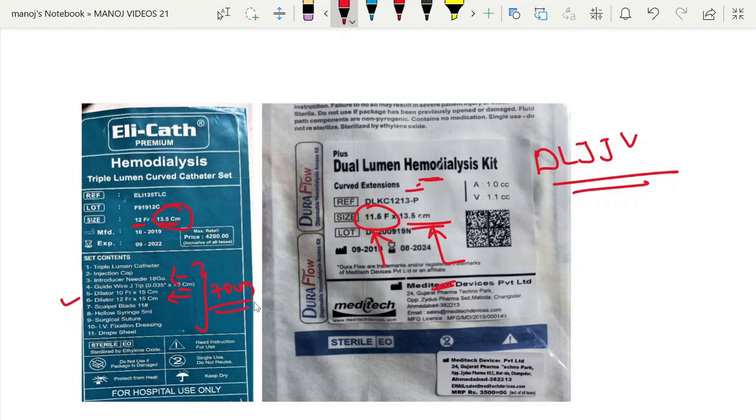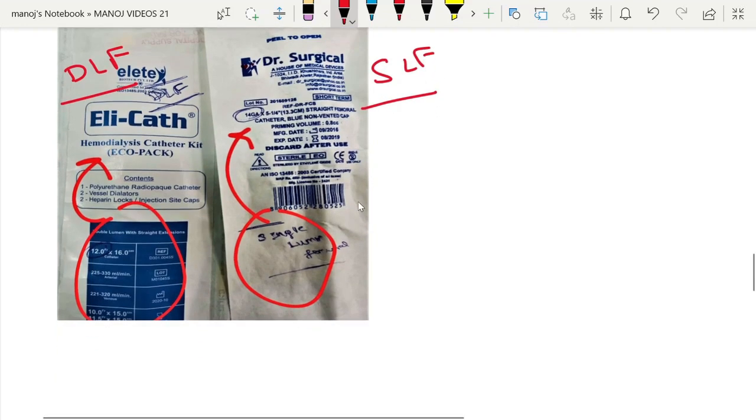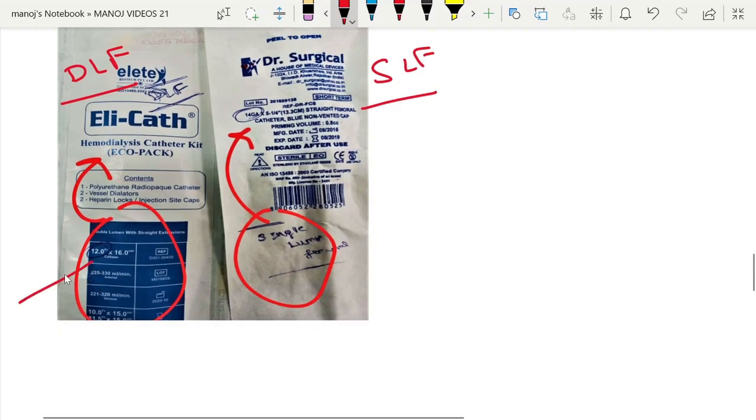This is the wrapper of double lumen femoral catheter. As we see here the size is 12 French or 16 centimeter. And here they have mentioned what will be the blood flow it can give, the blood flow up to 225 to 330 ml per minute.